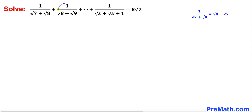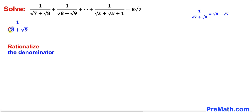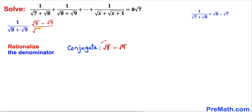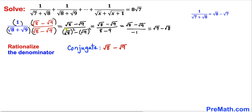Now let's focus on the next term: 1 divided by square root of 8 plus square root of 9. We are going to rationalize its denominator as well by multiplying and dividing by its conjugate, which is square root of 8 minus square root of 9. Repeating the same steps as before, we end up with square root of 9 minus square root of 8.